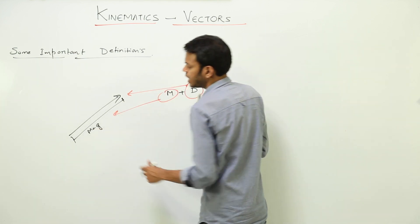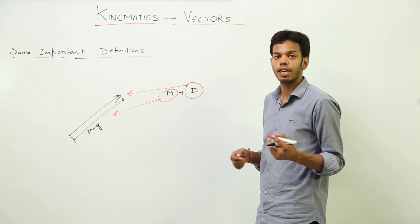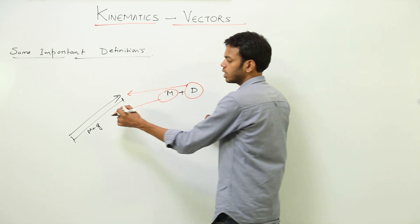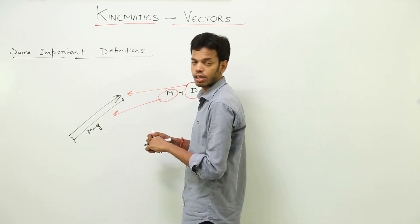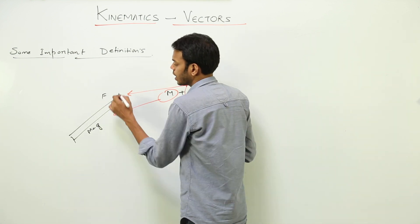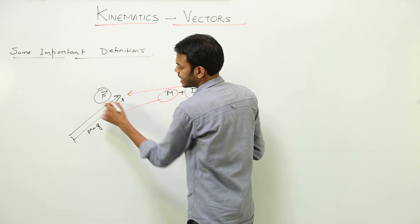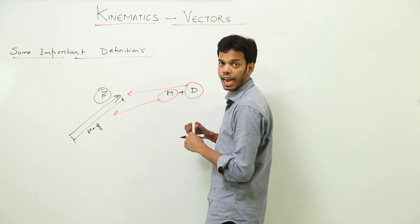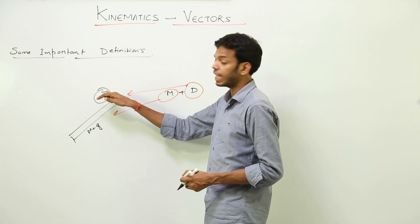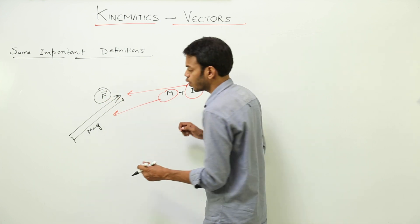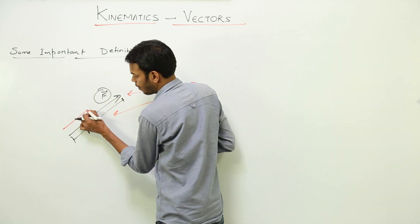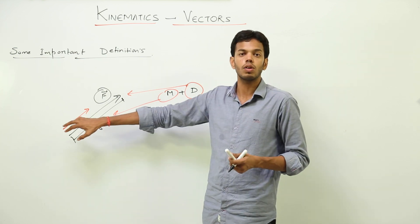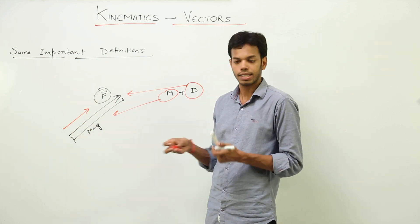So if I have to draw a vector which is less in magnitude than this vector — suppose this is a force vector — I have to represent another vector having less magnitude than this force. I will draw a vector with a smaller length, so less magnitude but in the same direction.